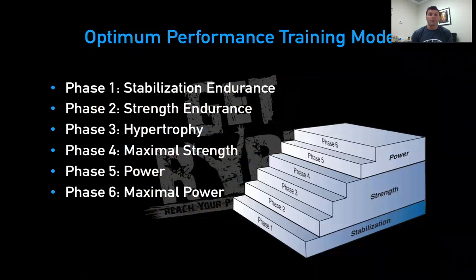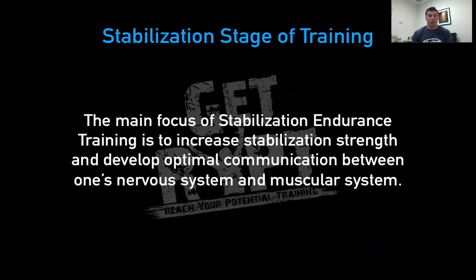Now, with the Optimum Performance Training model, there are six phases. Phase one is stabilization endurance. Phases two, three, and four are going to be our strength phases: strength endurance, hypertrophy, and maximal strength. The last two phases are going to be our power phases.